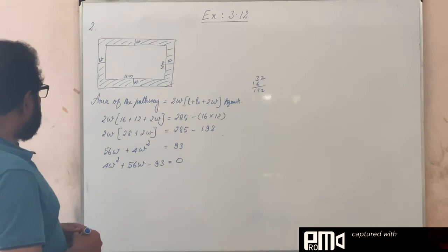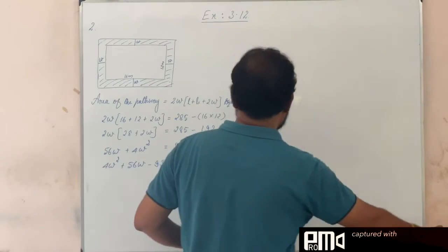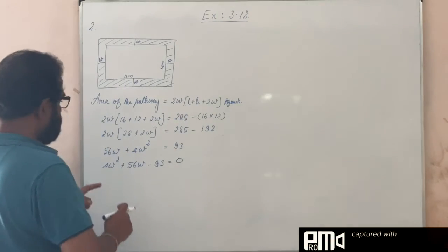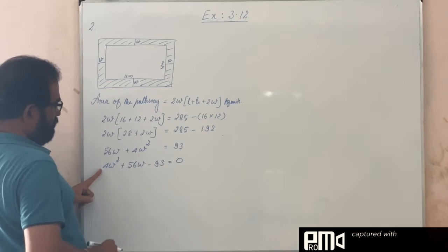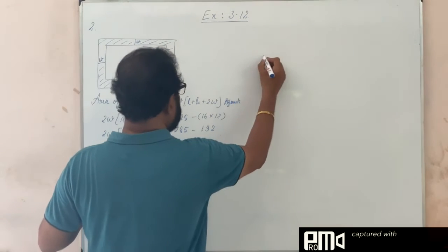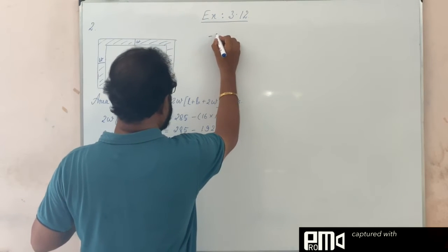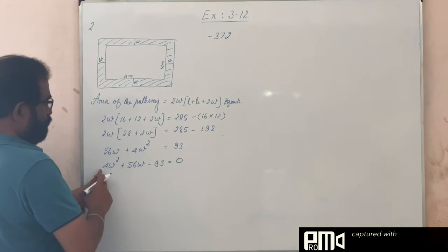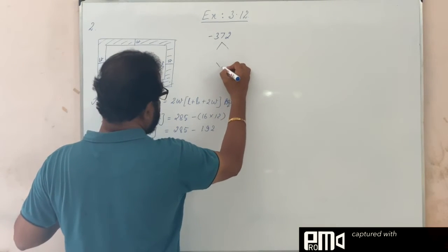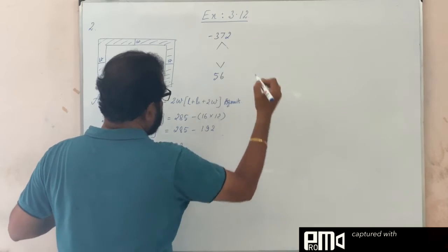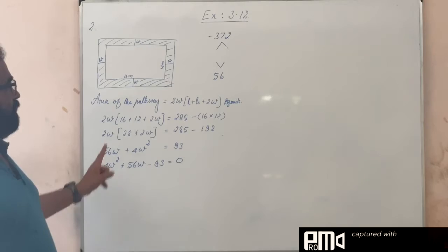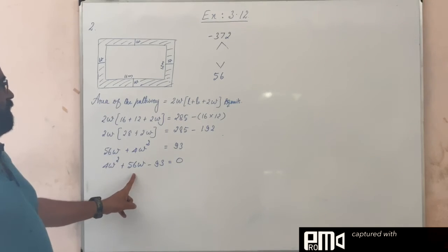As usual, we find the factors. Product of the factors: 4 into minus 93 equals minus 372. Sum of the factors is 56. By trial and error, we find the two factors are 62 and minus 6, since 62 minus 6 equals 56, and 62 into minus 6 equals minus 372.